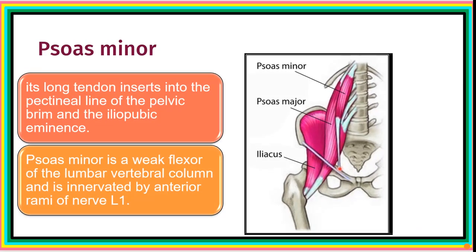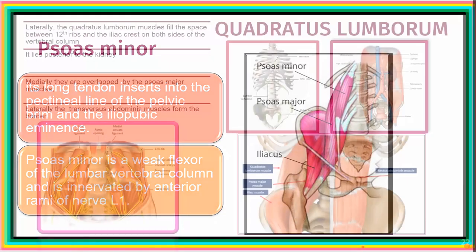For its action, psoas minor is a weak flexor of the lumbar vertebral column. For innervation, it is innervated by the lumbar plexus, specifically the anterior ramus of the L1 nerve.